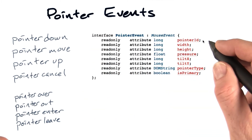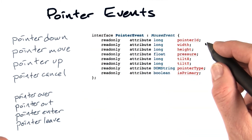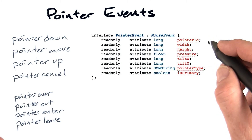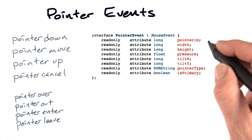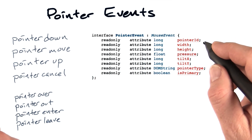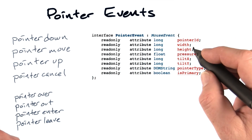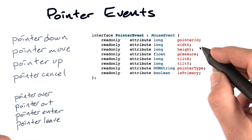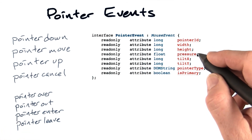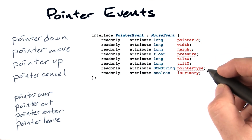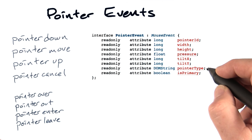The pointer event itself derives from mouse event, so it gets all the same coordinates as mouse events, as well as a few things from touch. It has a unique pointer ID, similar to that touch ID we saw in touch events. It also has a width and a height of the touch point in touch cases. For pen cases, it may have pressure or tilt. And of course, the pointer event tells you what type of pointer it is — whether it's a mouse pointer, a touch pointer, or a pen input.